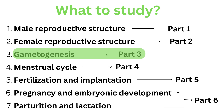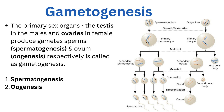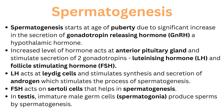Now we are going to start the video. We have studied Part 1 and Part 2 — that is male reproductive structure and female reproductive structure. The links of these two videos are attached on the i-button above. Today we are starting gametogenesis, that is Part 3. Gametogenesis is basically the formation of gametes. The primary sex organs — testes in males and ovaries in females — produce gametes: sperm in spermatogenesis and ovum in oogenesis respectively.